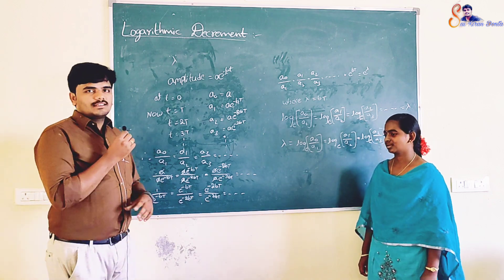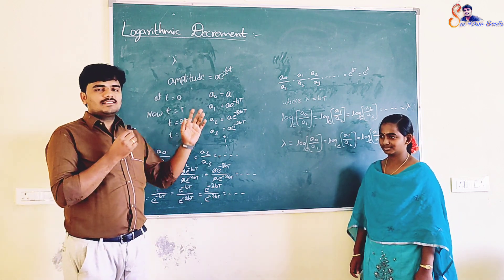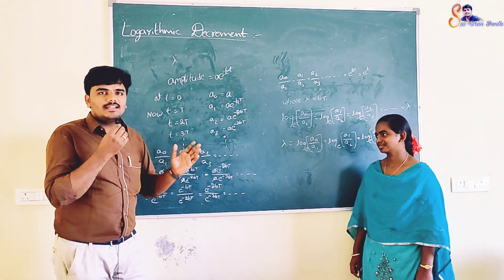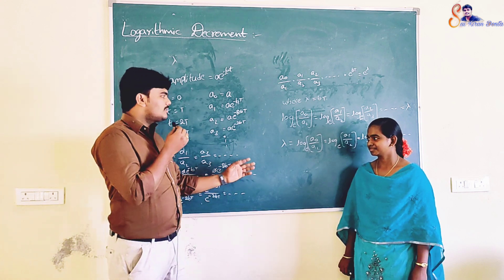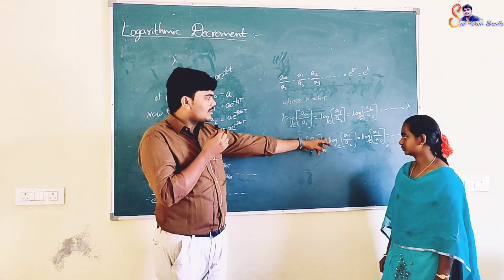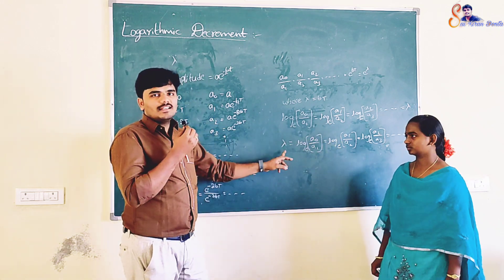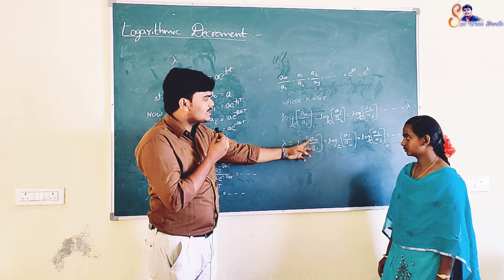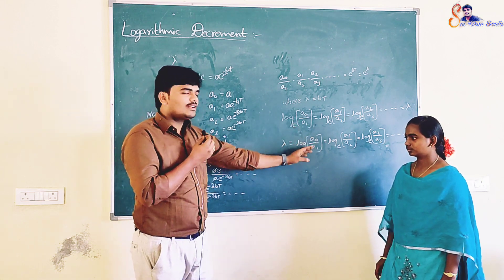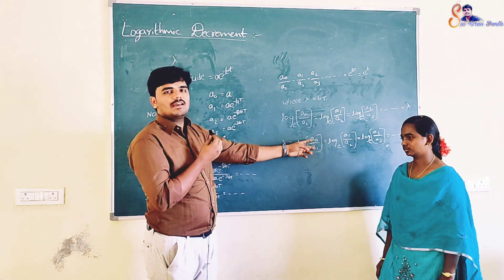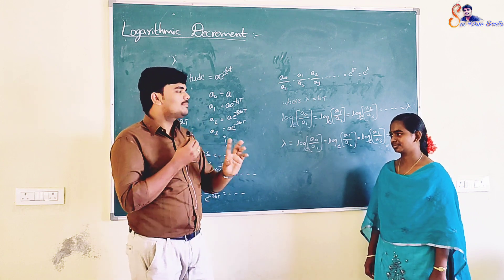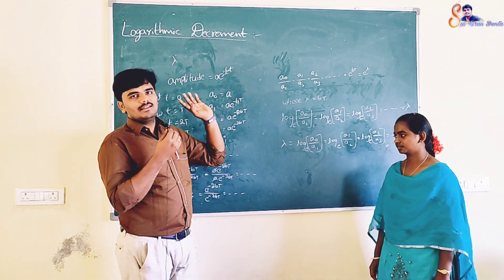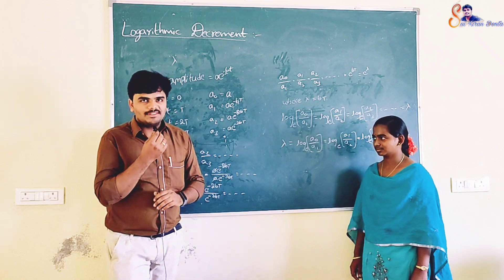This is about the logarithmic decrement. Logarithmic decrement measures the time rate at which the amplitude dies away. From the derivation, lambda = log(a₀/a₁) = log(a₁/a₂) = log(a₂/a₃). Logarithmic decrement is defined as the natural logarithm of the ratio of two successive maximum amplitudes separated by one time period. For any doubts, use the comment section. Thank you.